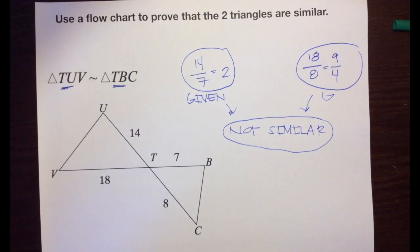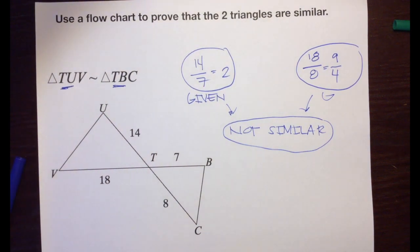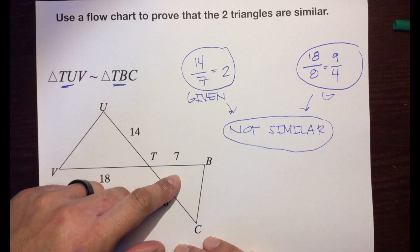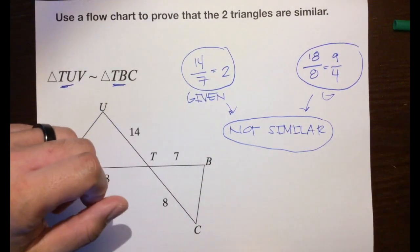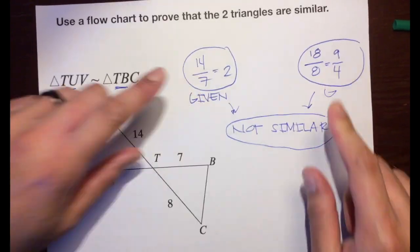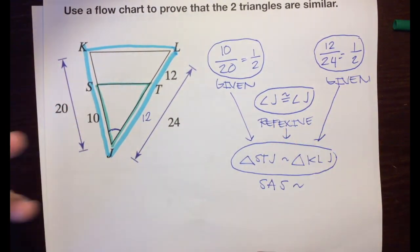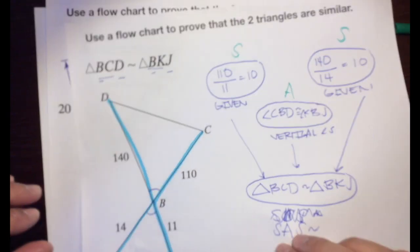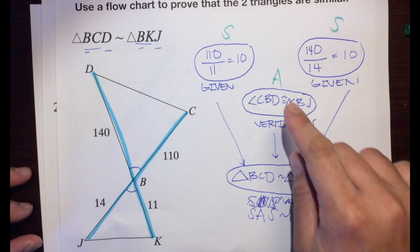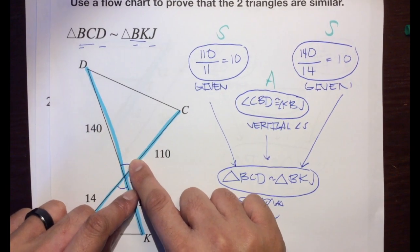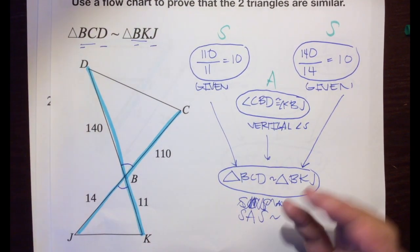That's it. You could have talked about the vertical angles, but we don't have to because the sides aren't proportional. So remember: side-angle-side is our third tool to prove two triangles are similar, along with side-side-side similarity and angle-angle similarity. For SAS, just remember the angle has to be sandwiched between the two sides that are proportional. That's how you use side-angle-side similarity. Have a great day.